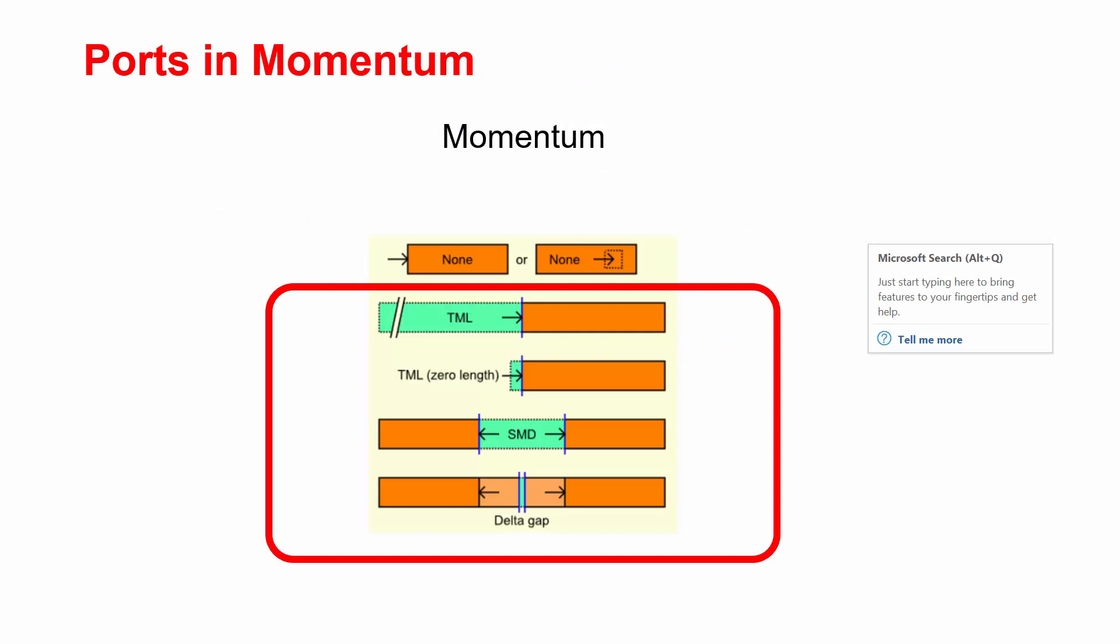For the rest of the types of ports, you see that there are parts of virtual ports marked in green color that are connected to the structure and then will be de-embedded. These are called calibration.